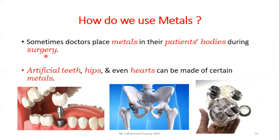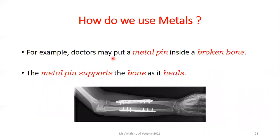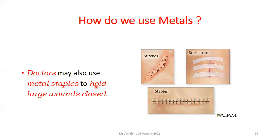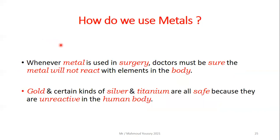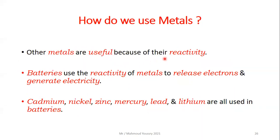In medicine, doctors sometimes place metals inside patients' bodies during surgery. Artificial teeth, hips, or even hearts can be made of certain metals. Doctors may put a metal pin inside a broken bone to support it as it heals, or use metal staples to hold large wounds closed. Whenever a metal is used in surgery, doctors must ensure it will not react with elements in the human body. Gold, certain kinds of silver, and titanium are all safe because they are unreactive in the human body.